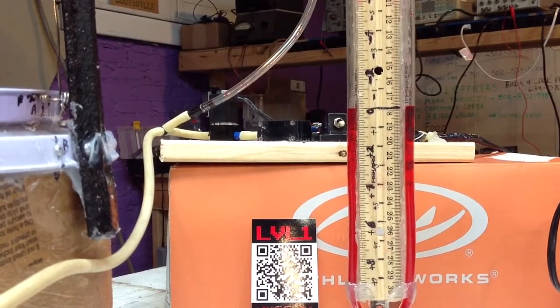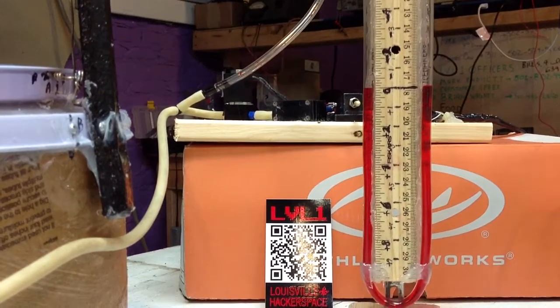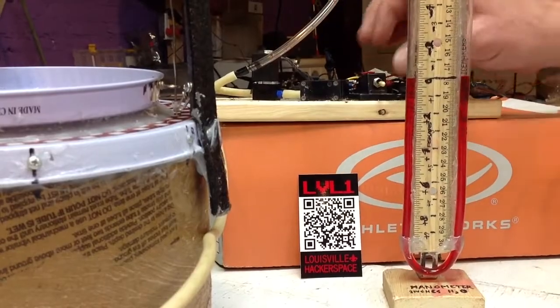And the difference between the heights of the columns in inches represents inches of water pressure. It's directly convertible to atmospheres or PSI or whatever you need, or Pascals, whatever you need.